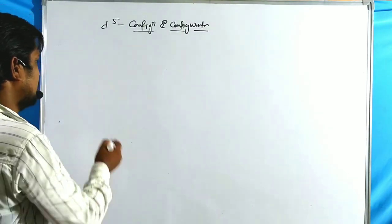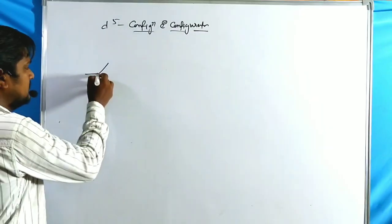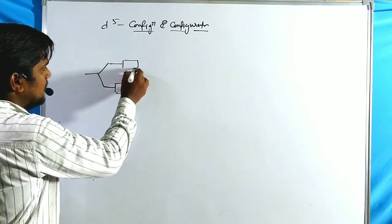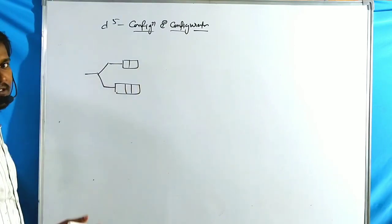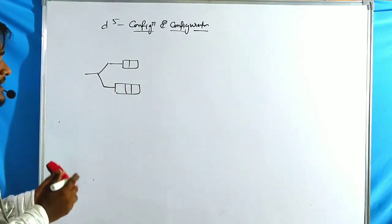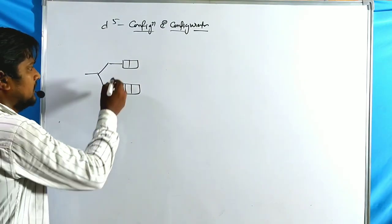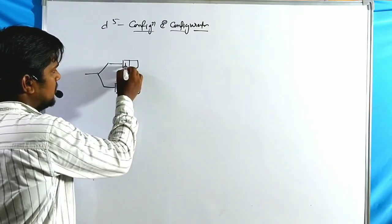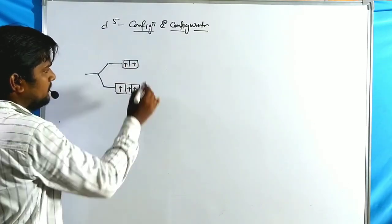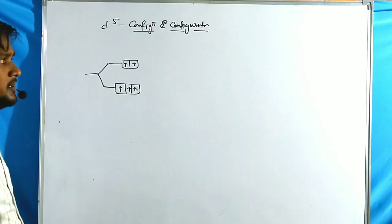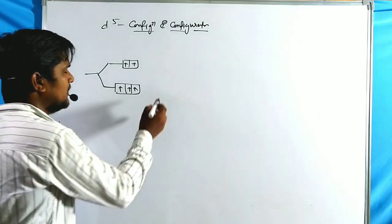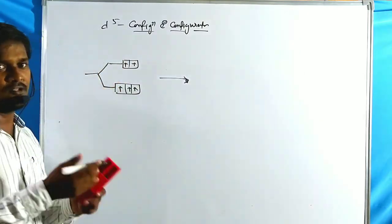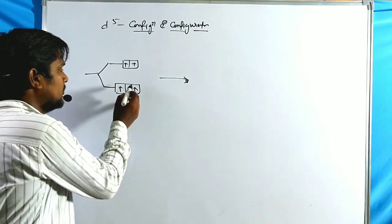In the d⁵ configuration, the octahedral geometry splits the d orbitals into two levels: T₂g and Eg. All five electrons occupy all five orbitals. The question is whether electronic transition is possible or not — let us check.